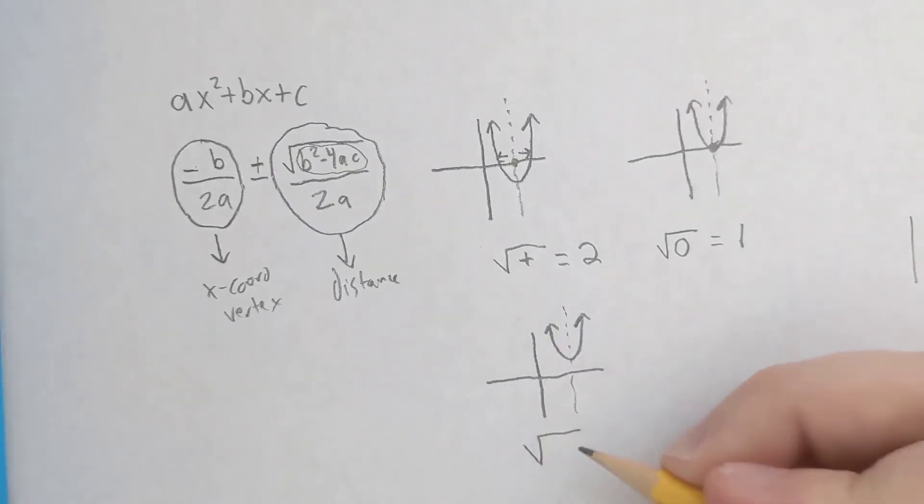And so that means that the discriminant must be negative. You're taking the square root of a negative number, which is imaginary, and in that case there are zero roots.